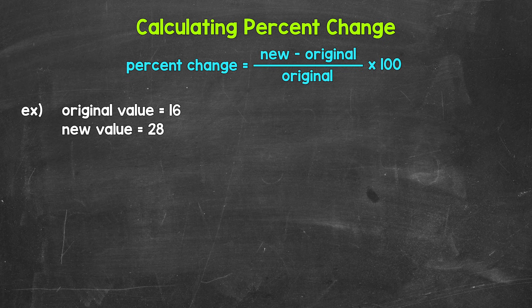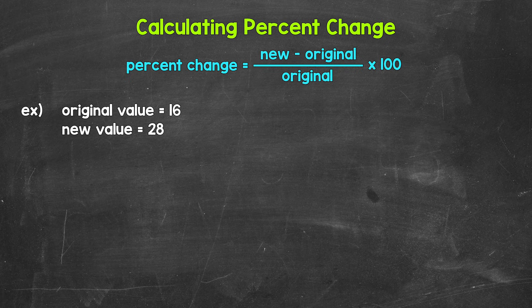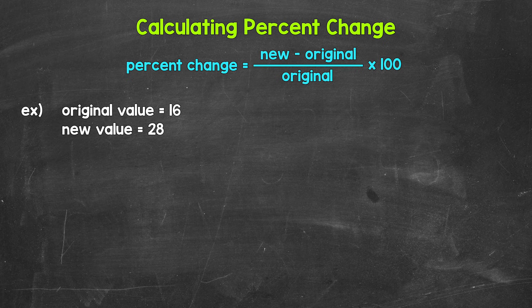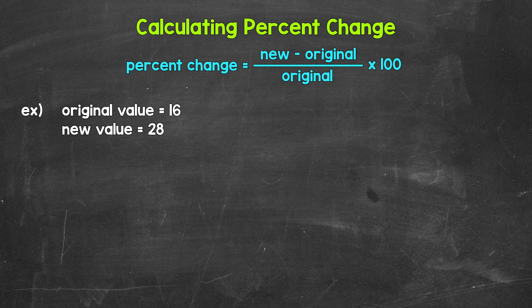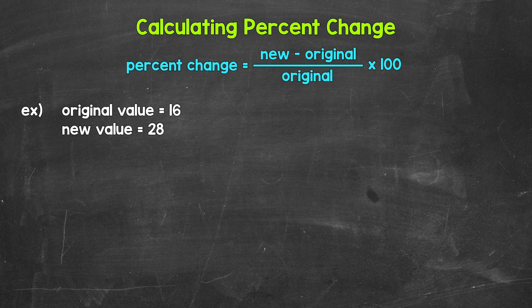Now we can calculate percent change by taking the new value and subtracting the original value. That gives us the amount of change, the amount of increase or decrease. Then we divide that result by the original value. And keep in mind, always divide by the original value because we are finding the percent change from that original value.